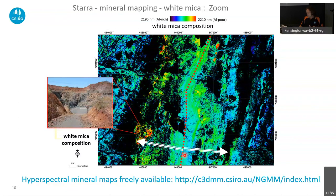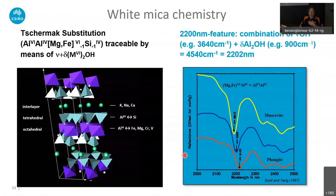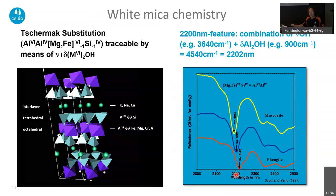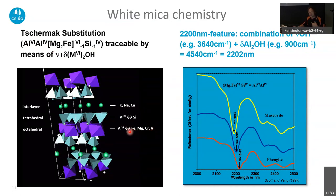Let's look more closely at what white mica chemistry means. On the right-hand side of slide 11 there's a diagram showing spectral signatures of different white micas — muscovite in yellow at the top and phengite in red at the bottom. You'll notice a certain absorption feature — often called the Al-OH feature or the 2200 nanometer feature — that shifts to longer wavelengths as we change the white mica composition from muscovite to phengite. This is largely due to the Tschermak exchange.